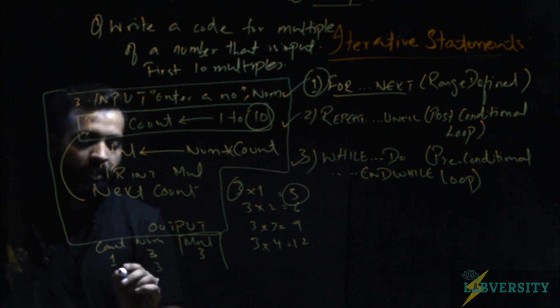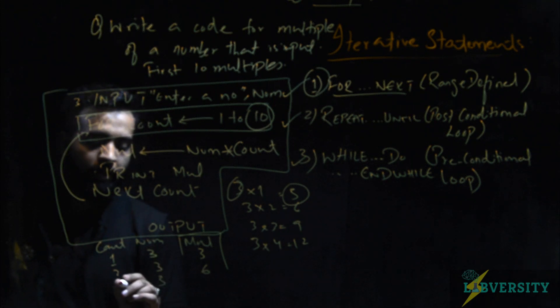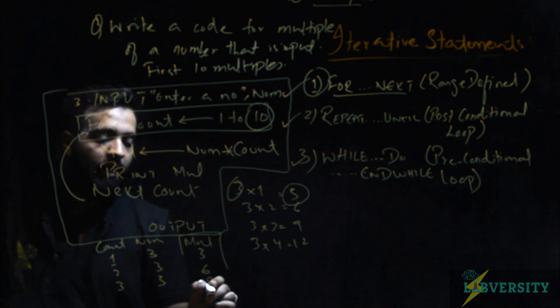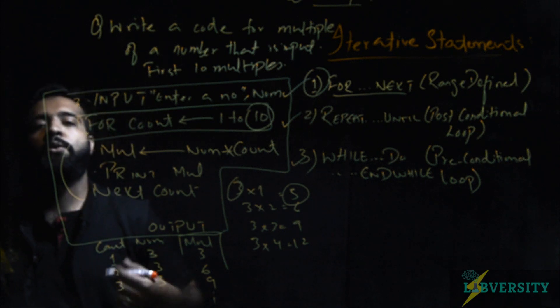The number will remain 3 and count will become 2, and then mul will be 6. This will be 3, this will become 3, this will be 9 and so on till 30. We will get the first 10 multiples of 3. So this is how you use a for loop.